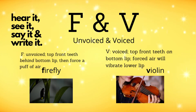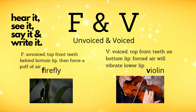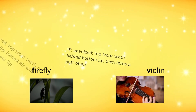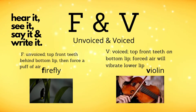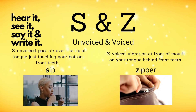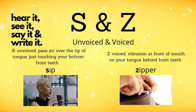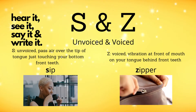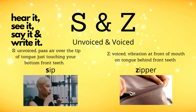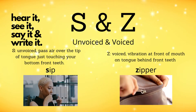F and V. F is unvoiced: the top front teeth are behind the bottom lip and you force out a puff of air — F, as in the word firefly. V is voiced: the top front teeth are on the bottom lip and you feel the vibration at the front of the mouth. S and Z: the tongue is behind the front teeth — Z, as in the word zipper.